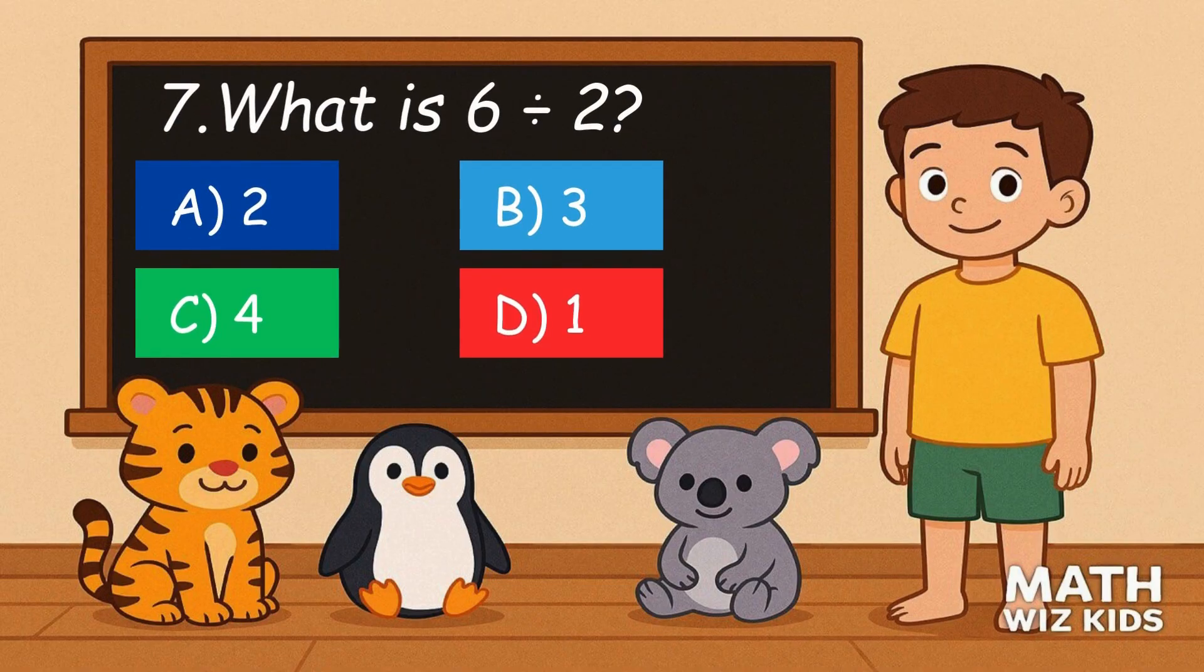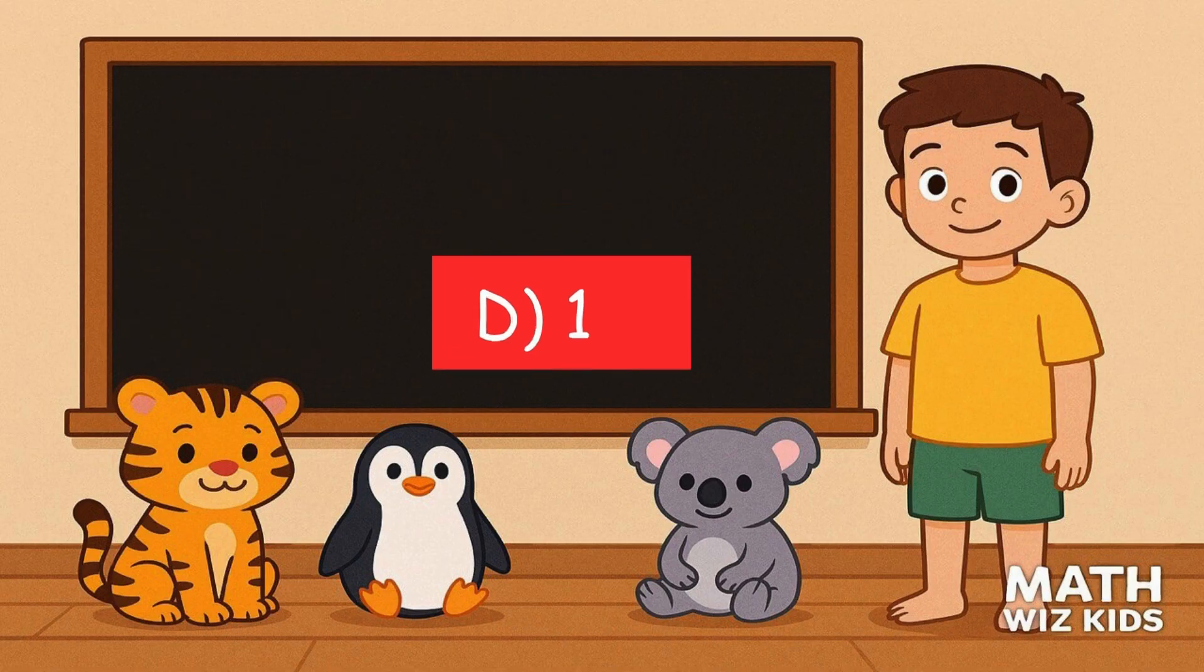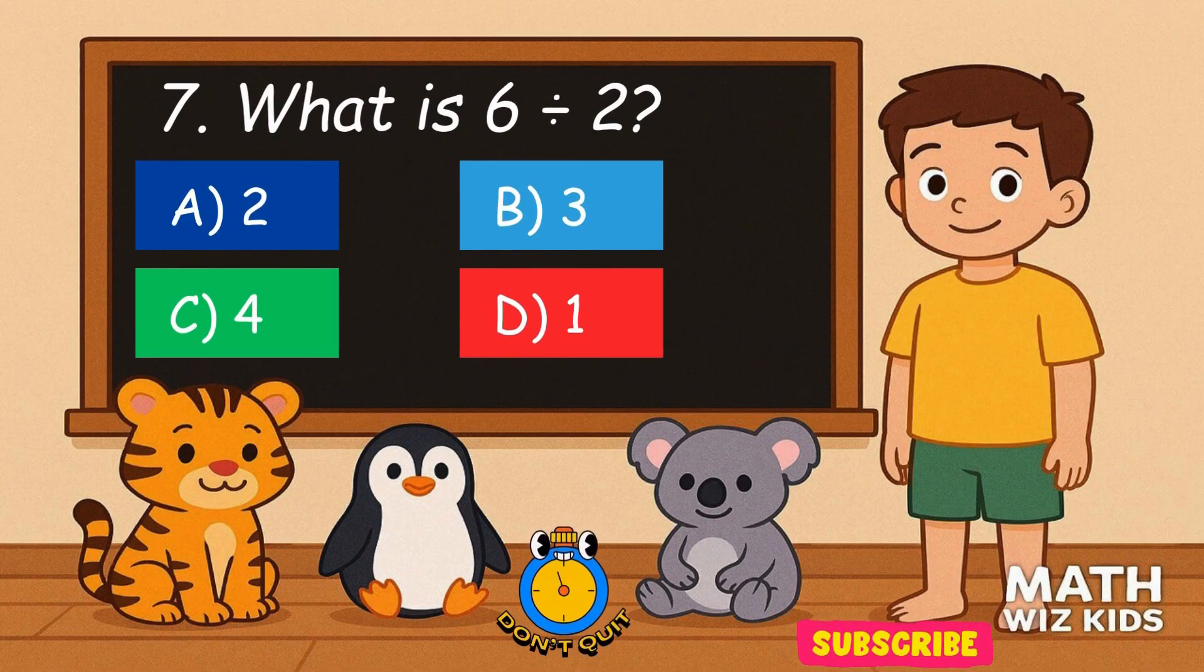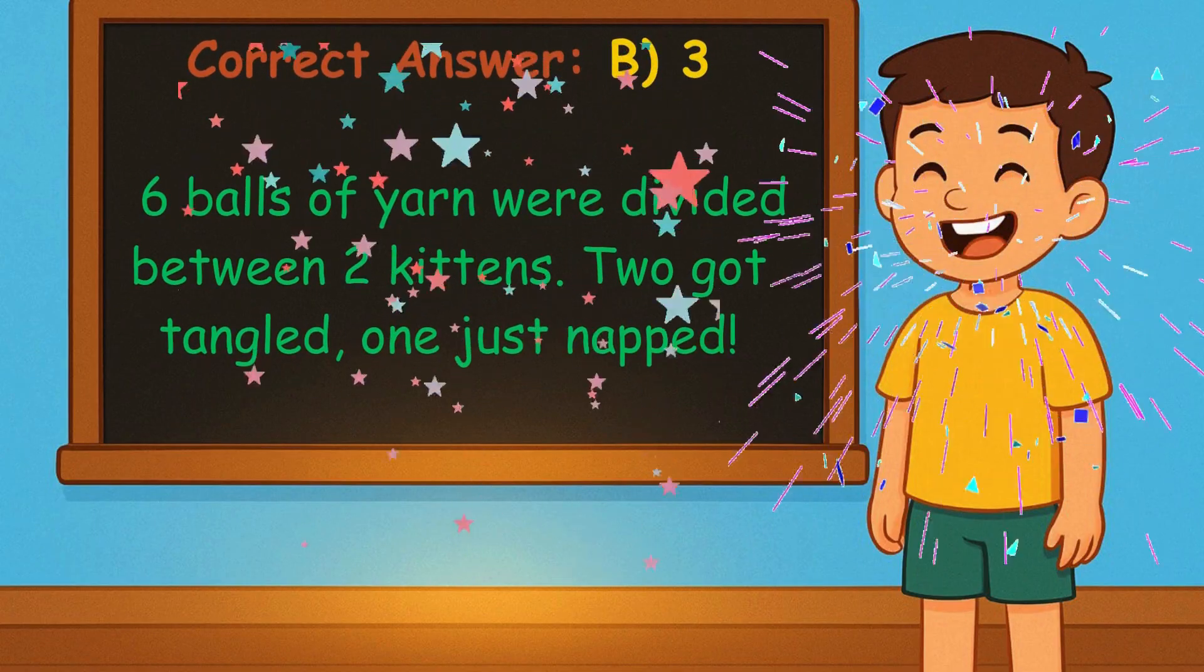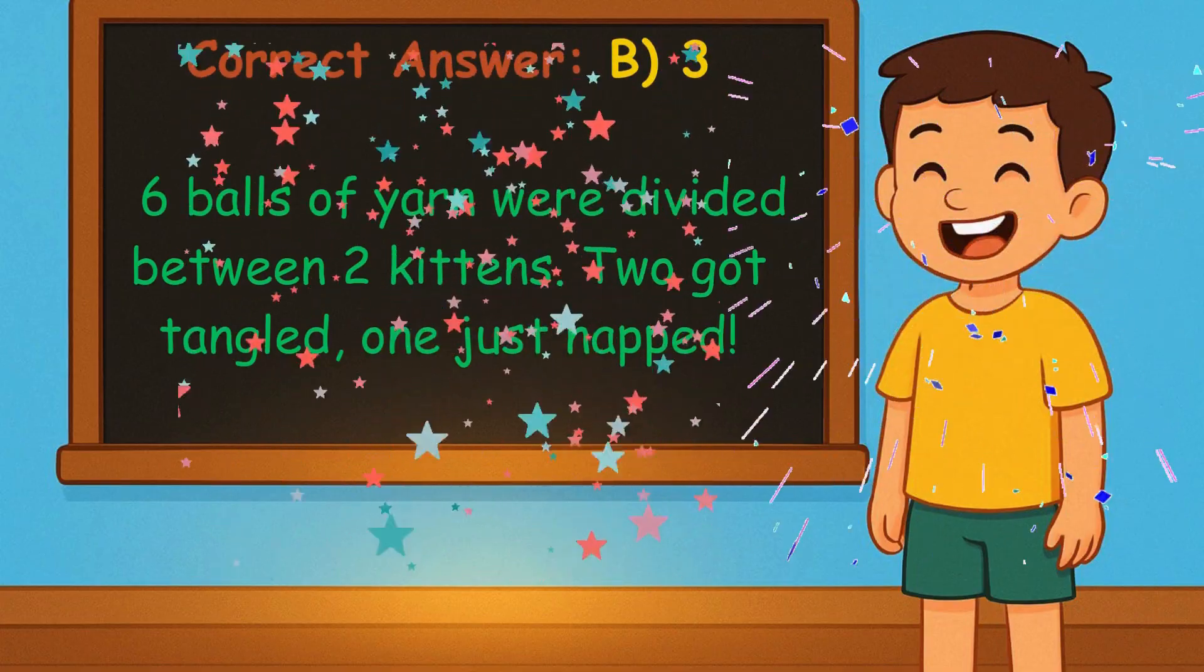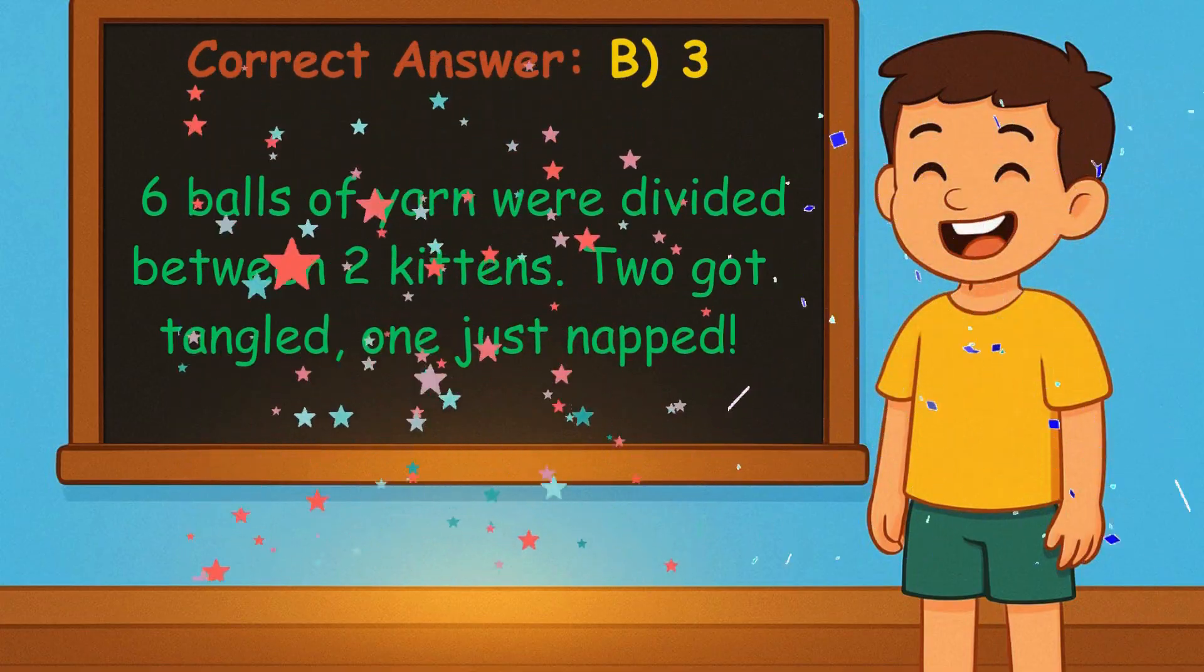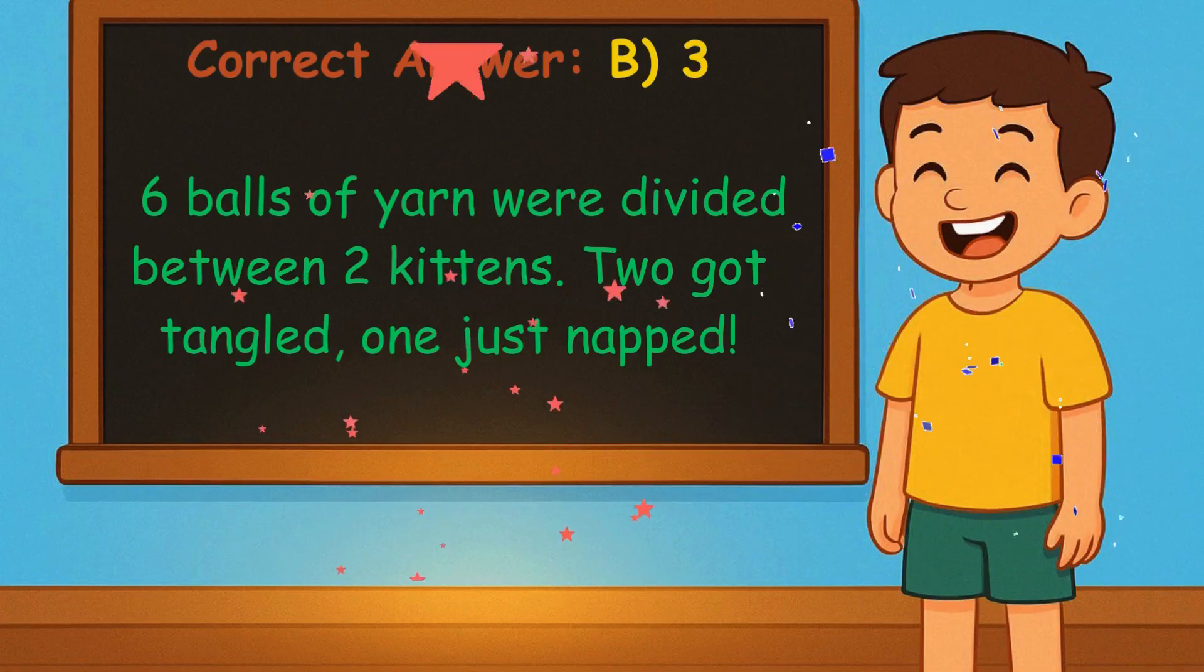7. What is 6 divided by 2? Is it A, 2, B, 3, C, 4, or D, 1? Correct answer is 3. Six balls of yarn were divided between two kittens. Two got tangled. One just napped.